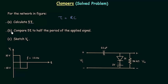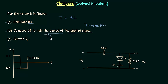In Part B we need to compare 5 tau to half the period of the applied signal. So the first thing we have to do in Part B is to calculate T, the time period of the waveform. Once we have T, we calculate T by 2 and compare it with 5 tau. In Part C we need to sketch the output voltage Vo. So let's start with Part A.